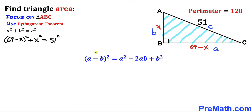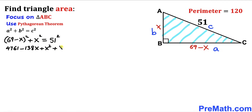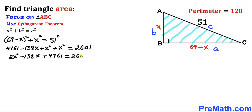Recalling the identity (a minus b) squared equals a squared minus 2ab plus b squared, we expand: 4761 minus 138x plus x squared, plus x squared equals 2601. Combining like terms on the left-hand side gives 2x squared minus 138x plus 4761 equals 2601.